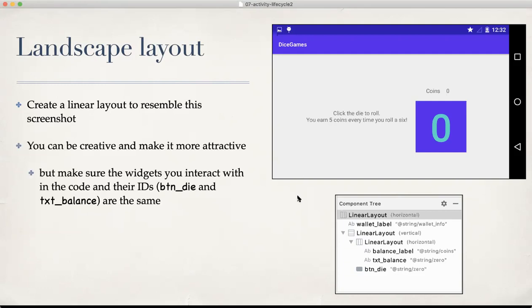So I'll leave this as an exercise, but please go ahead and do this before proceeding. Yeah, create a linear layout to resemble this screenshot, and here is the component tree corresponding to that. Note, the root element is horizontal as it shows here. Our root linear layout element has the attribute set to vertical, orientation attribute set to vertical in our existing layout. By the way, you can be creative and make it more attractive, make it better looking for sure.